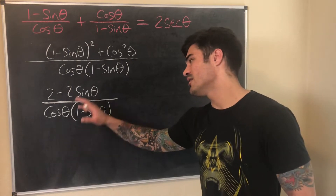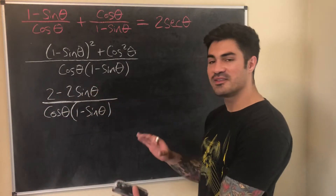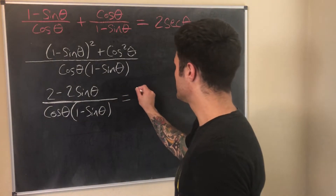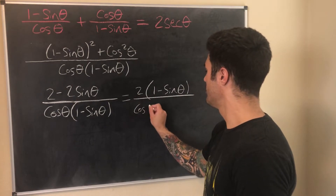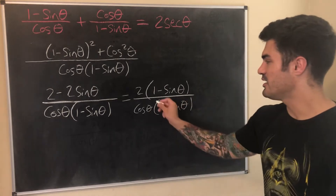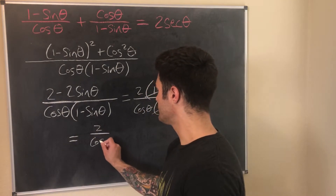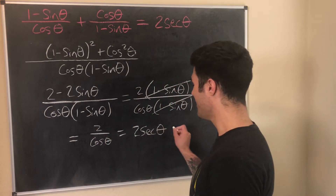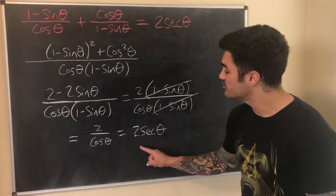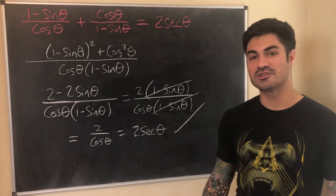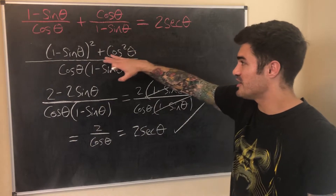Now I factor a 2 from the numerator, giving 2(1 − sinθ) over cosθ · (1 − sinθ). The (1 − sinθ) terms cancel, leaving 2/cosθ, which equals 2·secθ by the reciprocal identity. If you bring the 2 out front: 2 · (1/cosθ) = 2·secθ — exactly what we wanted to show. The common denominator approach wasn't too bad — just some multiplication and a couple of identities.